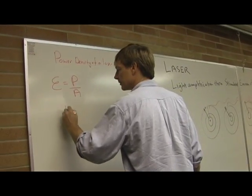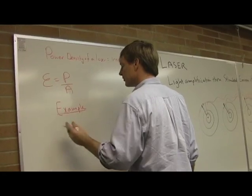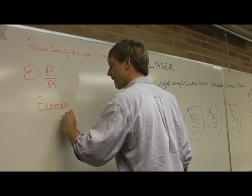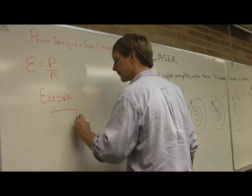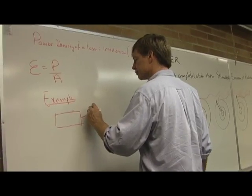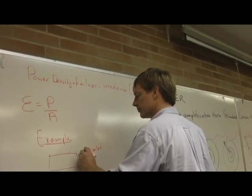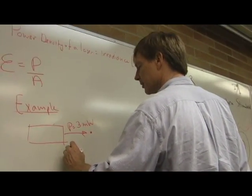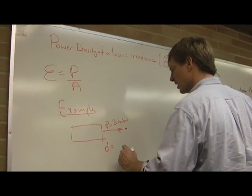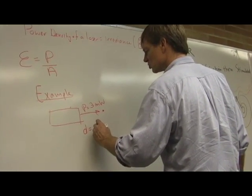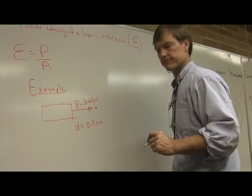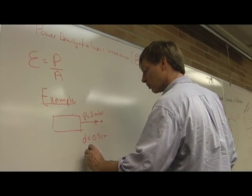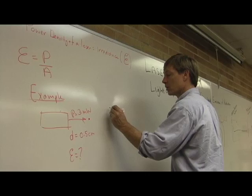Let me give you an example. Let's say I've got a laser coming out, and it's a 3-milliwatt laser. And it shoots on an area that's got a diameter of half a centimeter, which is about what that laser had at the beginning. And I want to know, what's the radiance?